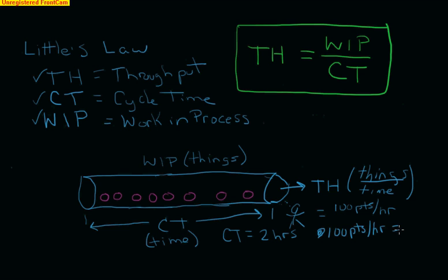And that's equal to the WIP divided by the cycle time, which in this case is two hours. You just have to make sure that your time units are always lining up—hours and hours in this case. And so when I do that math, I think it's pretty easy to see that the WIP is going to turn out to be 200 parts.